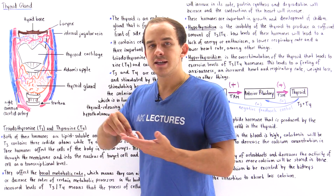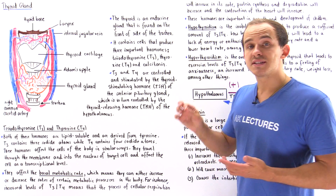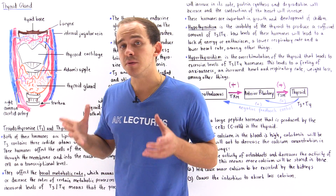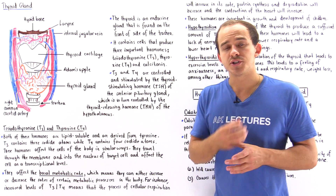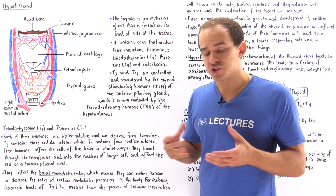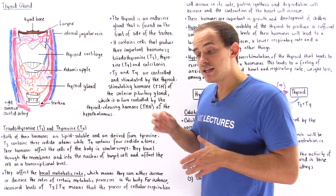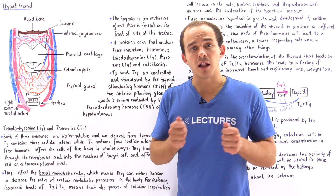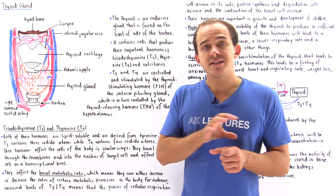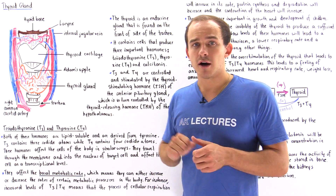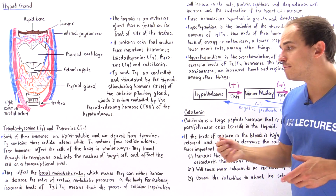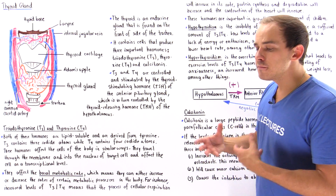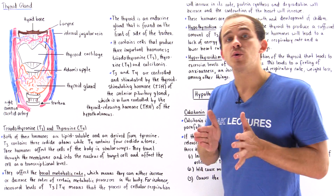T3 and T4 are both lipid soluble, meaning they do not dissolve in water or in our blood, and they require protein carriers to travel within our bloodstream. Because they are lipid soluble, T3 and T4 can easily pass across our cell membrane, entering the nucleus of the target cell, where they influence the cell on a transcriptional level — affecting different processes in our body, especially protein synthesis.